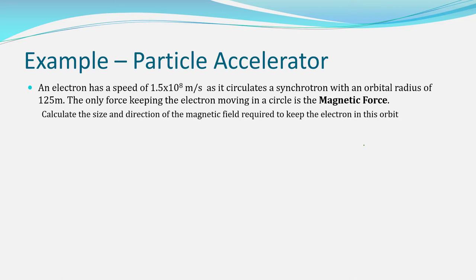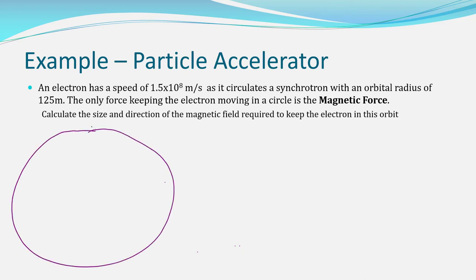The first extra example is the particle accelerator problem. In a synchrotron, electrons have already been accelerated and are now travelling at a constant speed in a circle. The magnetic field turns them to maintain circular motion. The key is that the only force keeping the electrons in their circular orbit is the magnetic force. Given that, can you calculate the size and direction of the magnetic field required to keep the electron in that particular orbit?